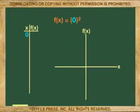When x is 0, the function of x is 0 squared or 0. When x is 1, the function is 1 squared or 1. When x is 2, the function is 2 squared or 4. When it is 3, 3 squared or 9.